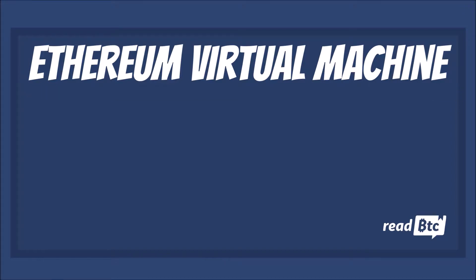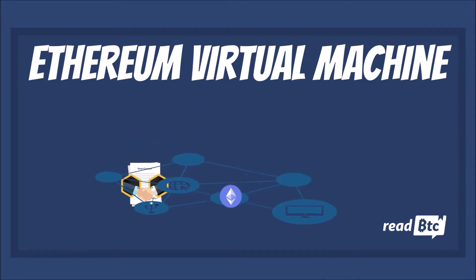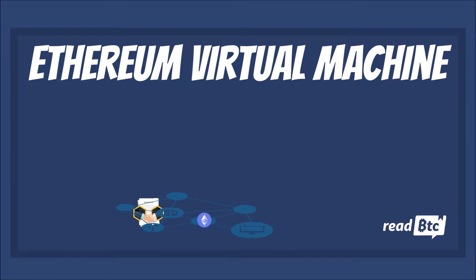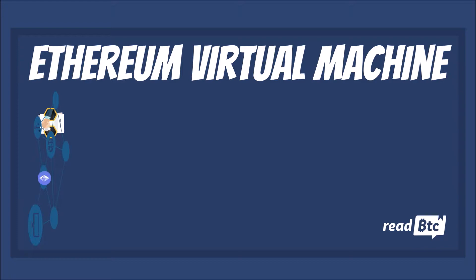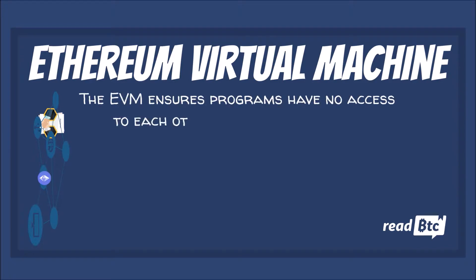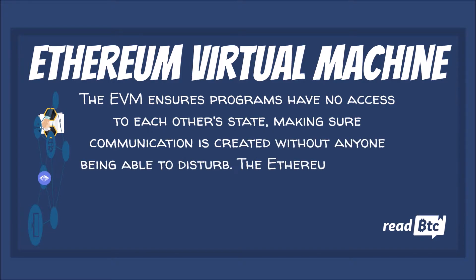This virtual machine is designed to be the infrastructure for smart contracts based on Ethereum. The big focus of this project is related to avoiding and preventing denial of service attacks, which became quite popular in the crypto world. To be more specific, the EVM ensures programs have no access to each other's state, making sure communication is created without anyone being able to disturb it.